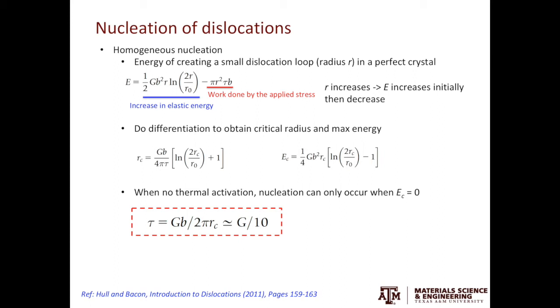The next question is, is this expression reasonable to explain what we observed experimentally for the strength of metals? Let's use aluminum as an example. The shear modulus of aluminum is about 25 gigapascal. Then 25 gigapascal divided by 10 gives us 2.5 gigapascal. But experimentally, the pure aluminum exhibits the strength of only 0.01 gigapascal. Hence, the homogeneous nucleation model cannot explain why we have a lot of dislocations in the plastically deformed metals.